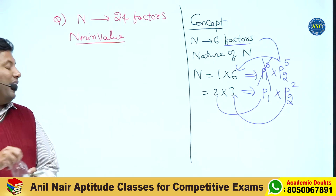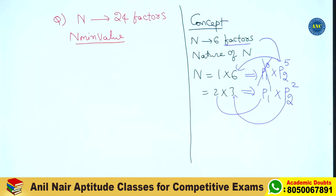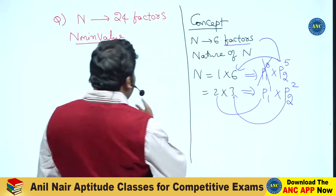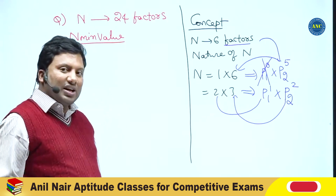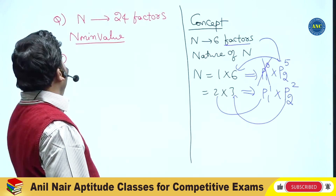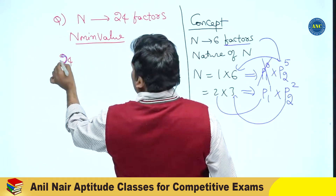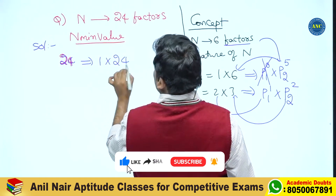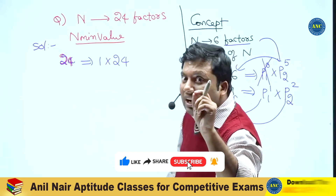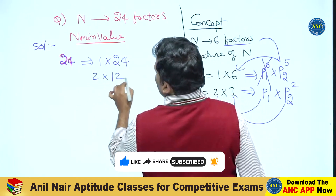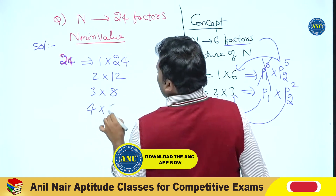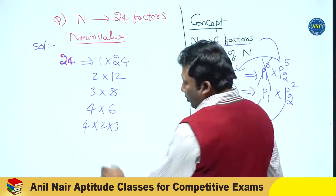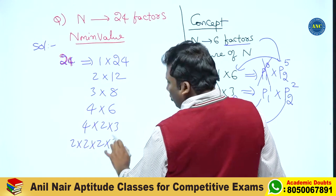Very interesting question. The learning from this: if the number of factors are given, decompose the number of factors till every element is a prime number. For 24 factors: 1×24, 2×12, 3×8, 4×6, and 4×6 = 4×2×3. Four can be written as 2×2, giving 2×2×3.